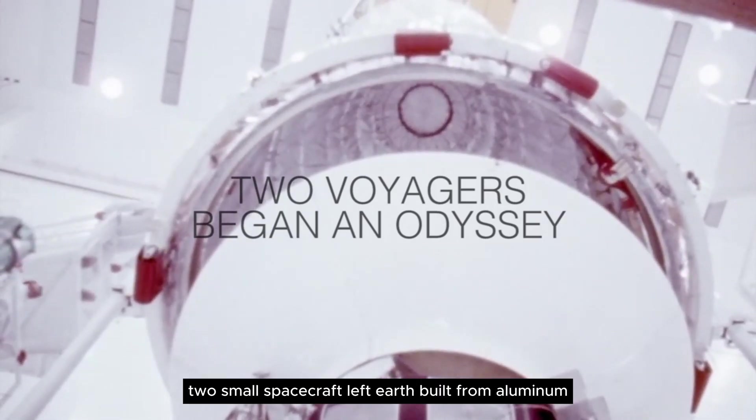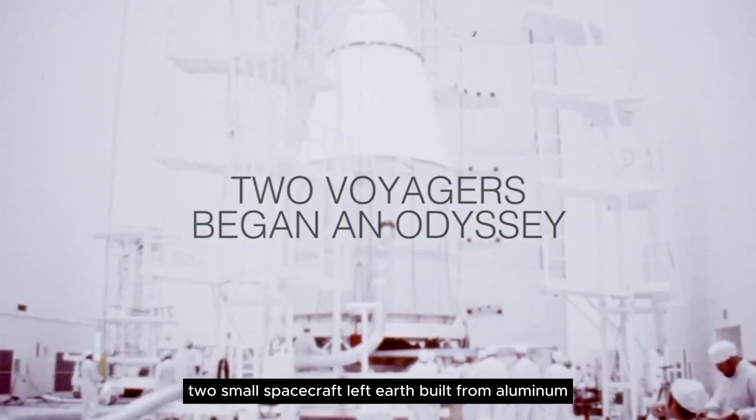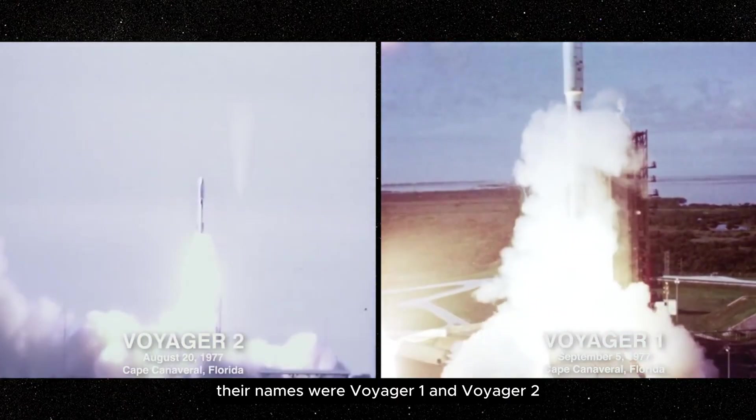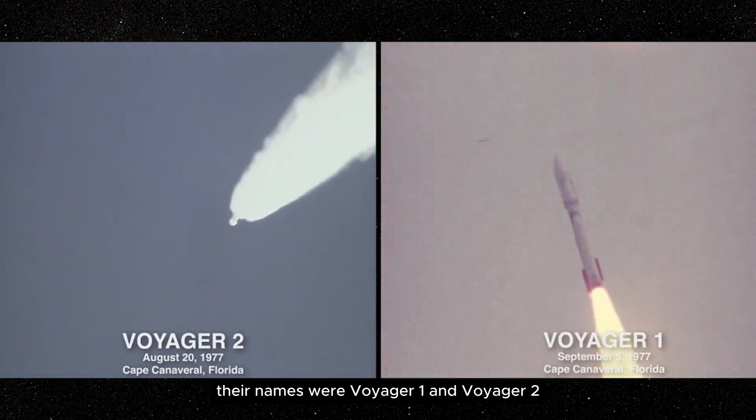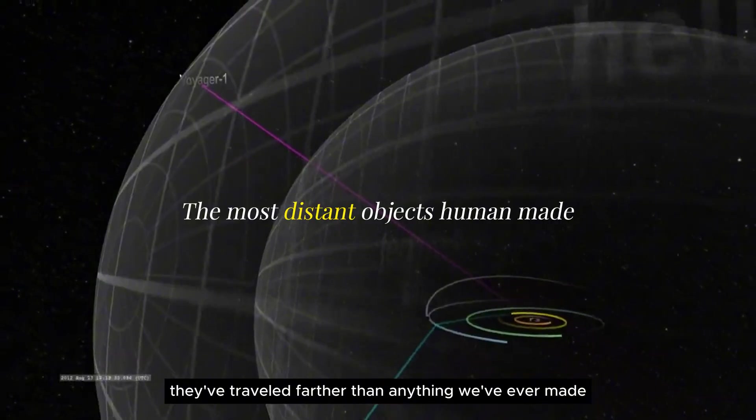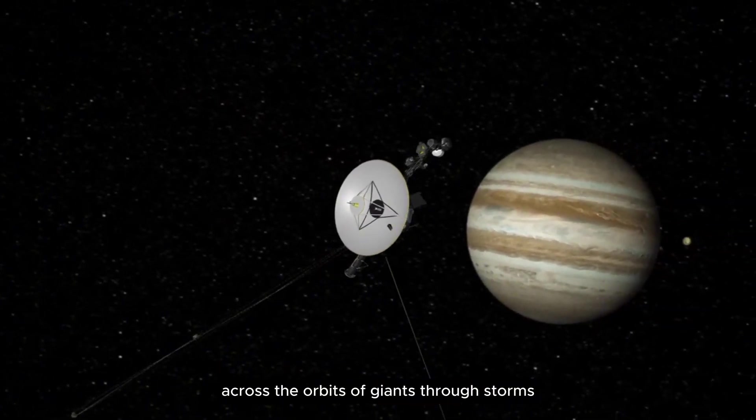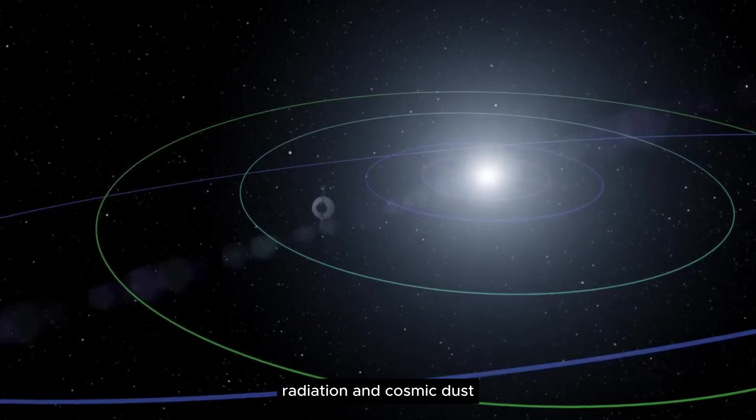In 1977, two small spacecraft left Earth, built from aluminum, gold, and human curiosity. Their names were Voyager 1 and Voyager 2. They've traveled farther than anything we've ever made, across the orbits of giants, through storms, radiation, and cosmic dust.